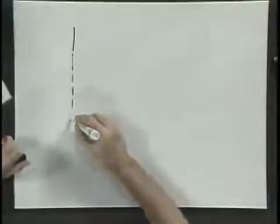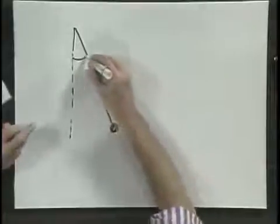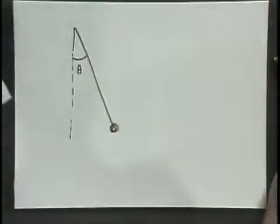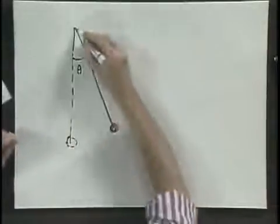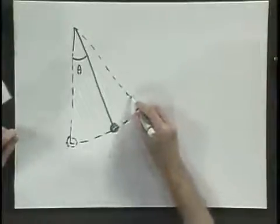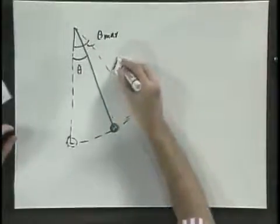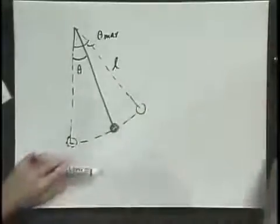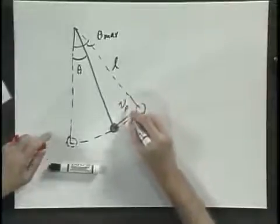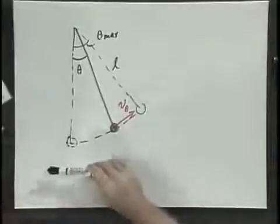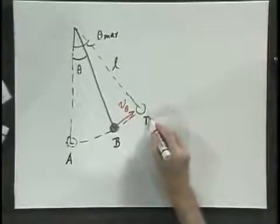Here's the pendulum, viewed when the angle is theta. This is the equilibrium position, and the pendulum will ultimately swing all the way to an angle theta max, with length L. The velocity at this point — let's call this point B — is V of theta. So we have here point A at equilibrium, point B, and let's call this point D.